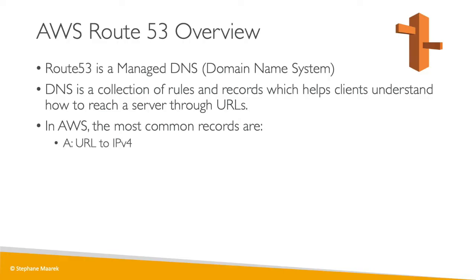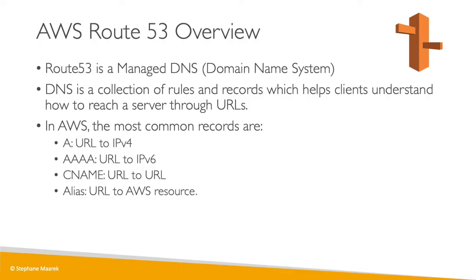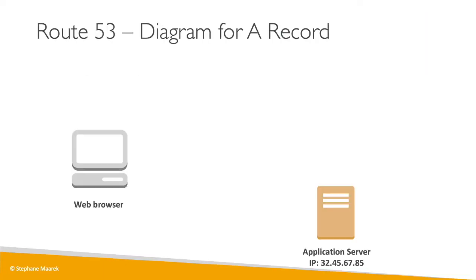The most common records you'll need to know are: A, which maps a URL to an IPv4 IP; AAAA, which maps a URL to an IPv6 IP; CNAME, which maps a URL to a URL; and Alias, which maps a URL to an AWS resource. We'll cover CNAME versus Alias in detail in a later lecture.